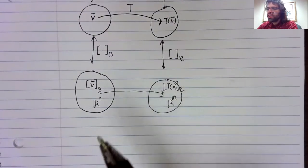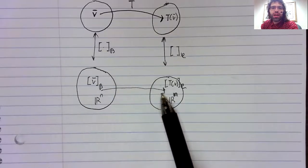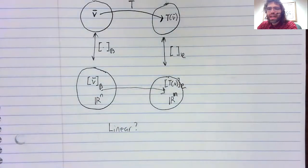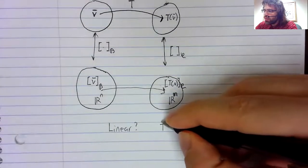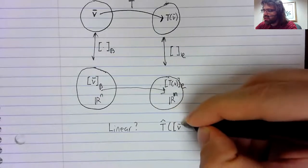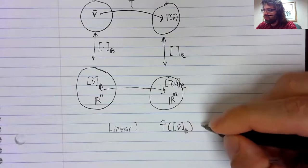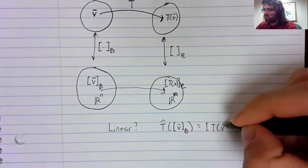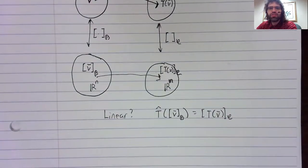If you're looking for a linear transformation from R^n to R^m, the natural thing to try would be to map the coordinate vector of v with respect to B to the coordinate vector of T(v) with respect to C.